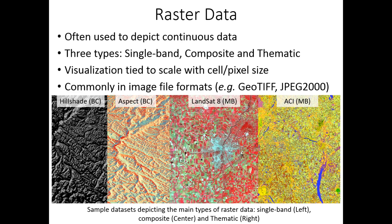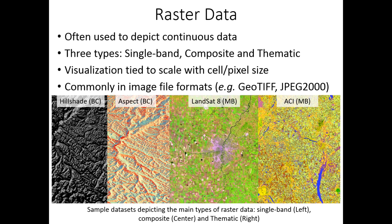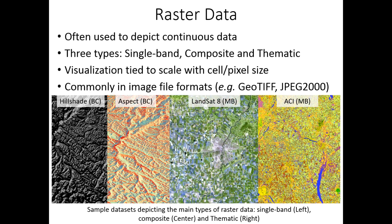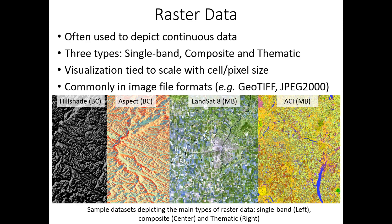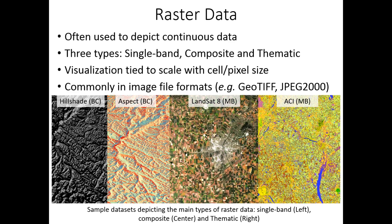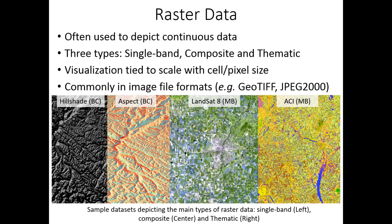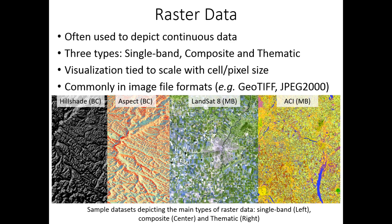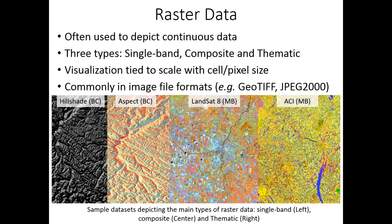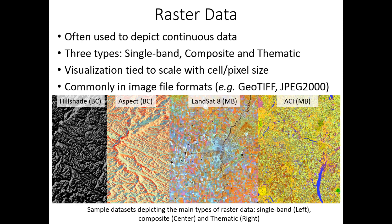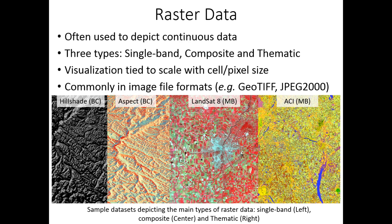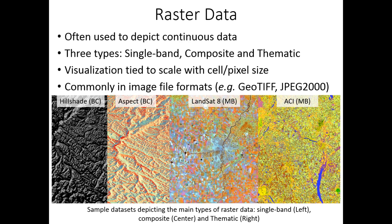Conversely, raster data often depicts continuous data. There are three broad types: single band, composite, and thematic. Single band shows variations of a single variable, like elevation, slope, precipitation, or hillshade and aspect, as shown on the left side of the figure. Composite rasters refer to remotely sensed data, like satellite imagery, as shown with the Landsat 8 image, where different bands can be combined for analysis and visualization. Thematic rasters are often used to release land cover classifications derived from composite imagery, like the annual crop inventory on the right. Unlike vector data, the visualization of raster data is scale dependent, varying with its cell or pixel size, which is tied to its spatial resolution. Raster data is strictly numeric, with each cell assigned a number corresponding to variations in a specific variable or attribute. Rasters are generally in image file formats, the most common formats being GeoTIFF and JPEG2000, and raster datasets underscore the finer-grained data that is publicly available, with resolutions of 15 to 30 meters being common.